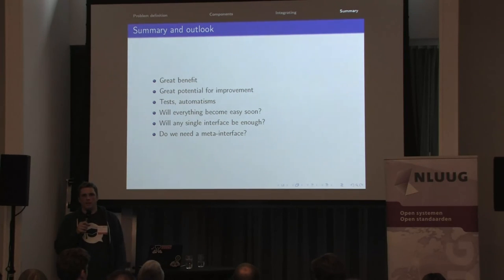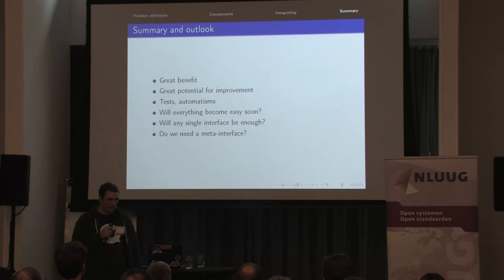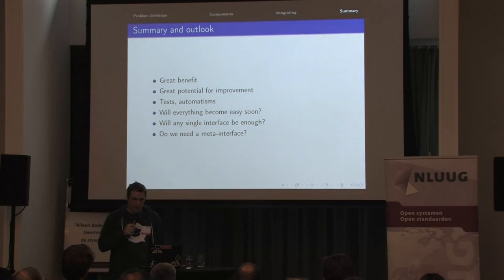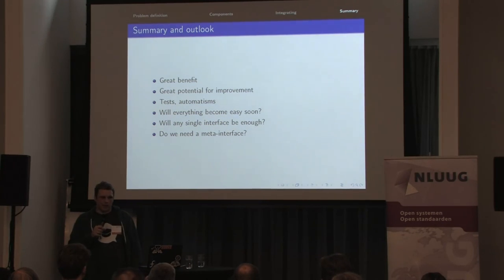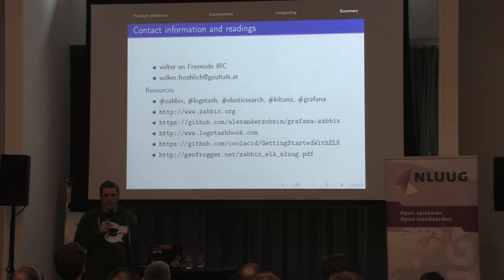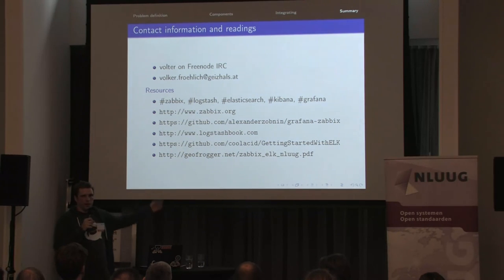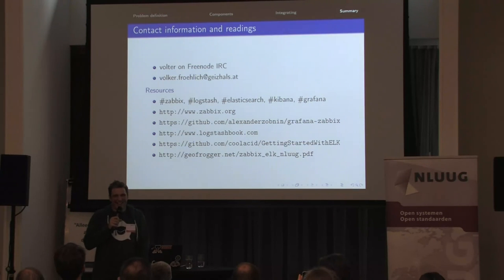So this is pretty much it. There's quite some potential in integrating this further. As you saw, it's a work in progress — some things can be done more efficiently and would need more testing and automation. I don't think the situation will become much easier soon, and you probably want a meta interface on top of all this data. Here are some readings you may enjoy: a cheap book on Logstash called the Logstash book — about $10 with free updates — and a collection of Logstash snippets by CoolAsset. This presentation is already available for download.